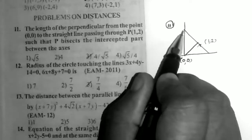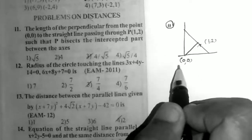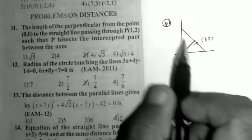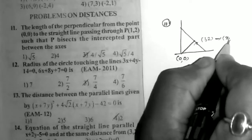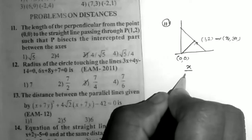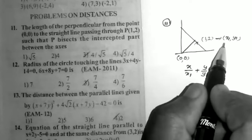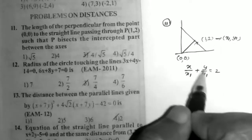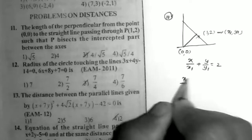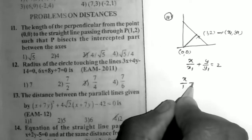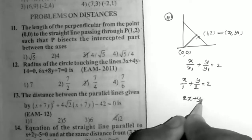Using this condition, first we find the equation of the straight line, then we find the length of the perpendicular. The formula: if the line is bisected at the point (x1, y1), then the equation of the line is x/x1 + y/y1 = 2. Replacing the given point (1,2): x/1 + y/2 = 2. Taking the LCM: 2x + y = 4.